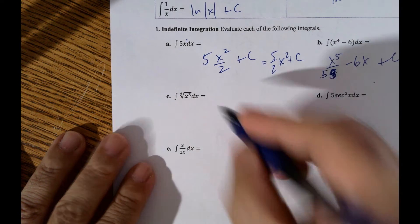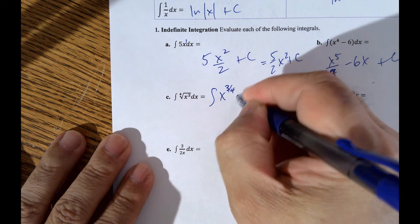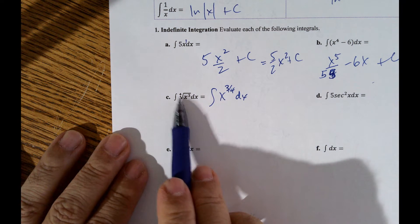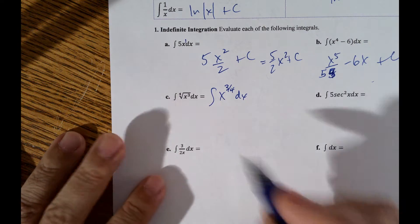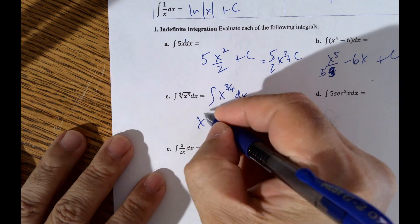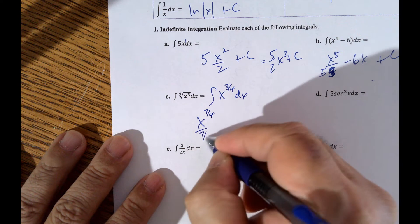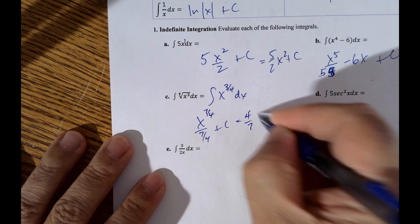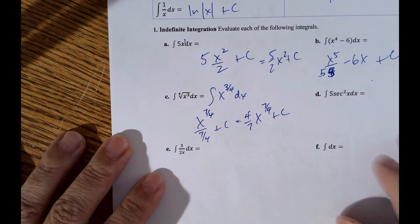Take this and rewrite it as an exponent: x to the 3 fourths. Remember, a root becomes the denominator of a fractional exponent. Then use the power rule — add 1 to the exponent to get 7 fourths, divide by the new exponent. That's really ugly, so simplify: 4 sevenths x to the 7 fourths plus C.